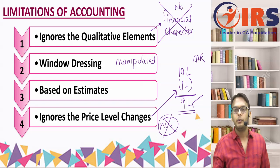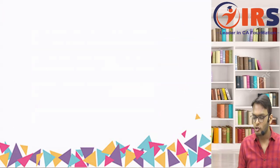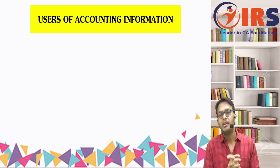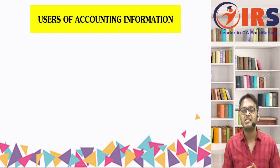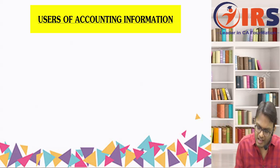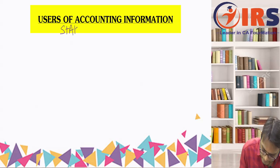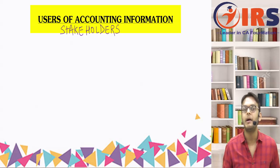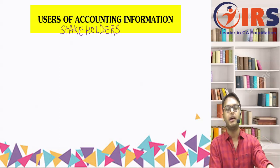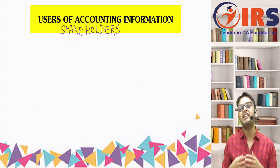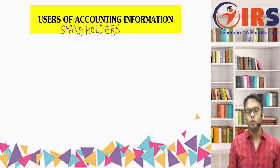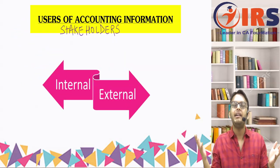Next topic: users of accounting information. After doing all this accounting, who actually uses it? These users are called stakeholders — those interested in knowing the results of our business. We divide users into two parts: internal users and external users.